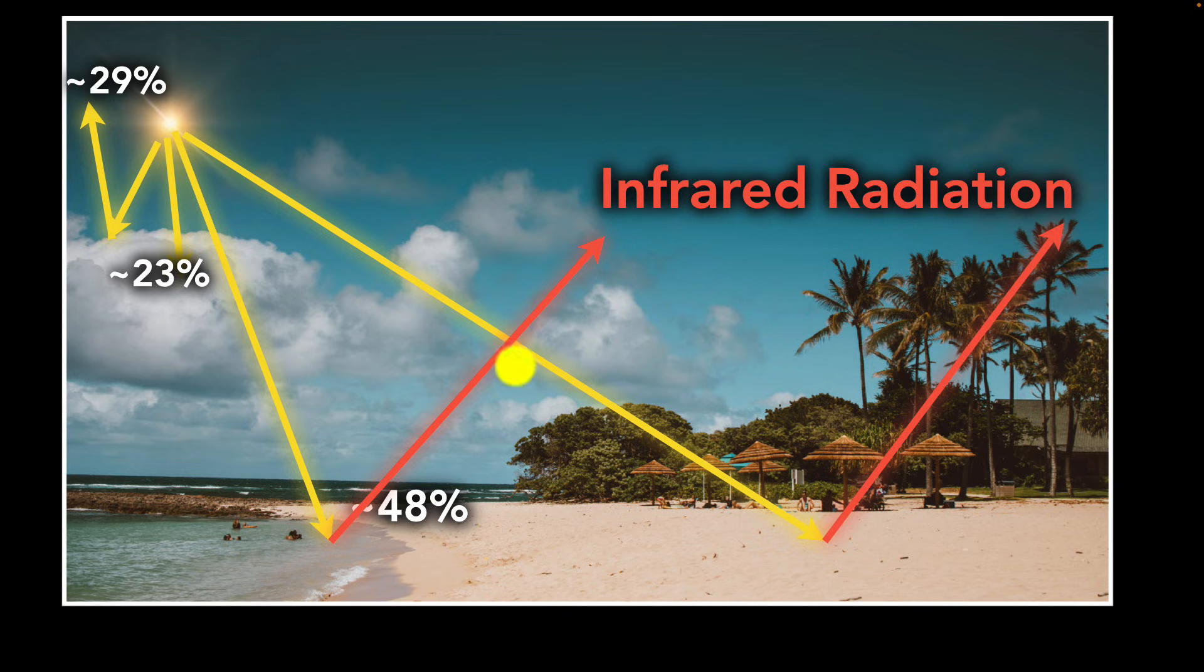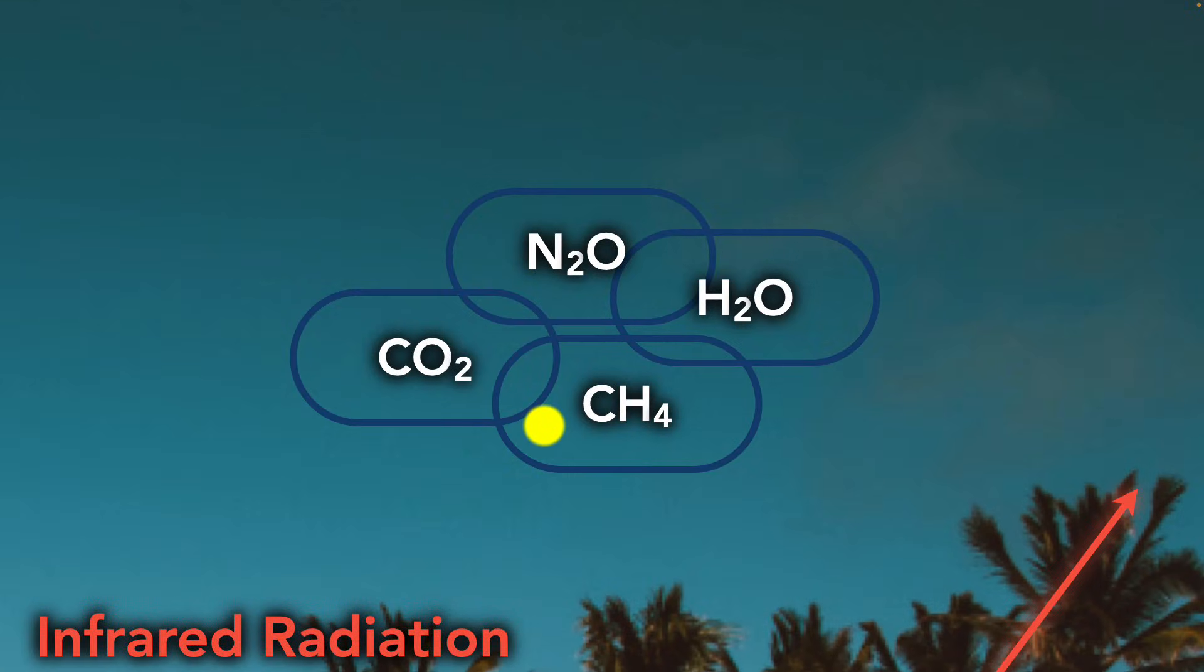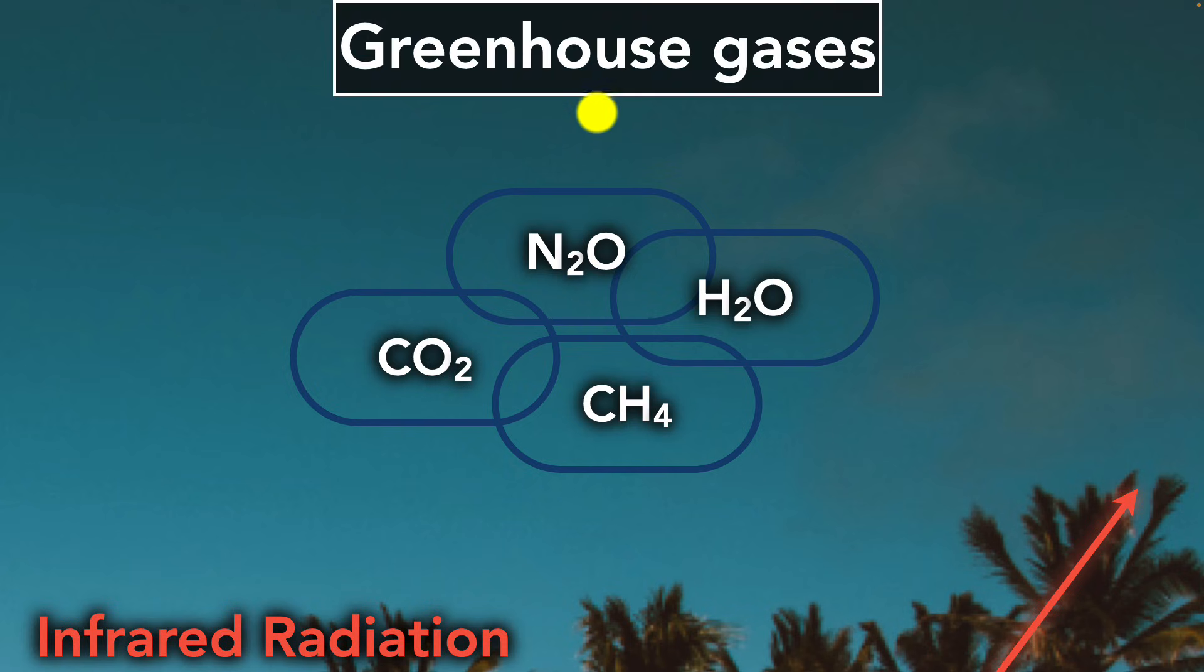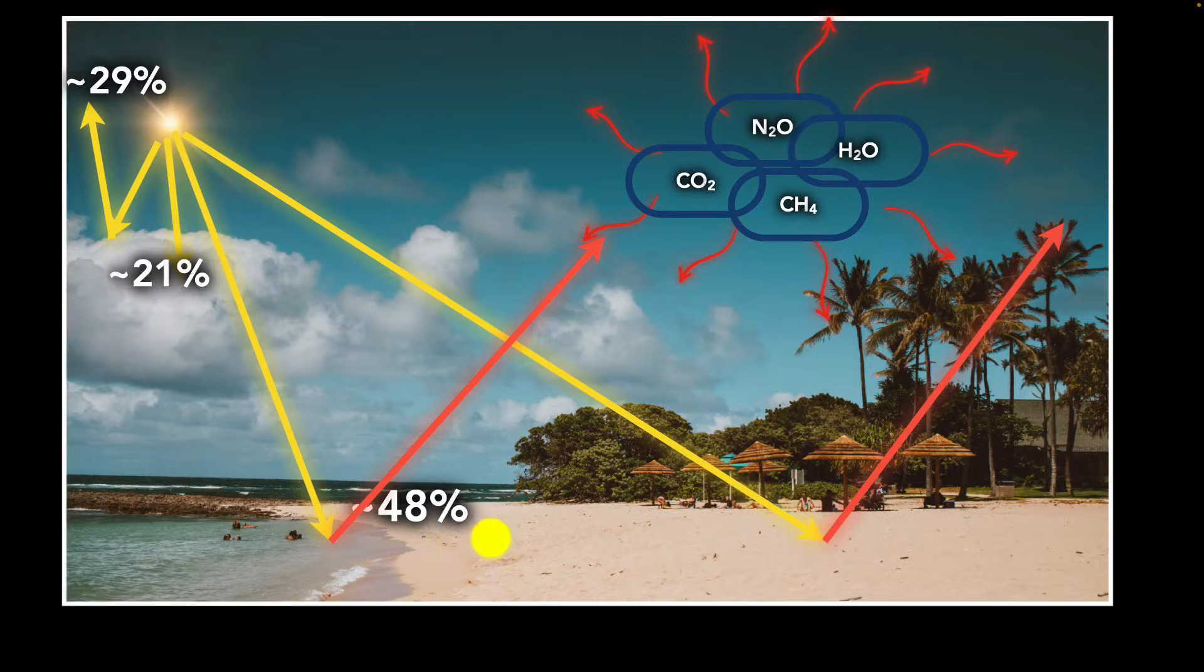But the big question is, what happens to this energy? Does it all go back into space? No. This is where the greenhouse gases come in. Carbon dioxide, methane, water vapor, nitrous oxide, they're all called greenhouse gases. They absorb some of that infrared radiation, and they get warmed up, and then they re-emit it back in all the direction, including back towards the Earth's surface. So this naturally warms up our planet, and this effect is called the greenhouse effect.